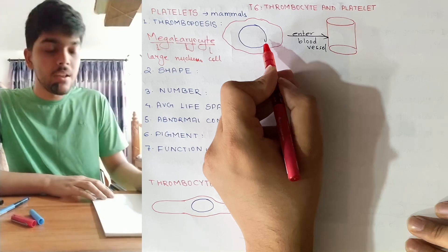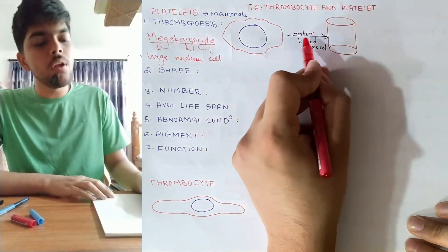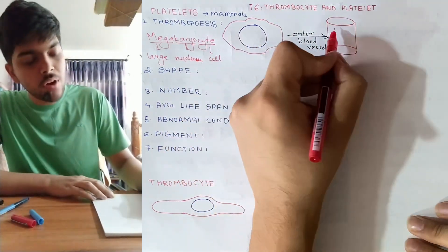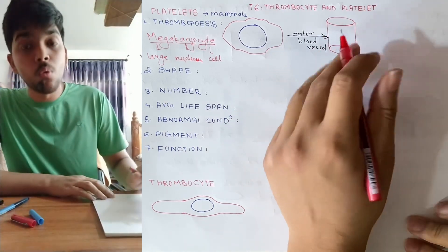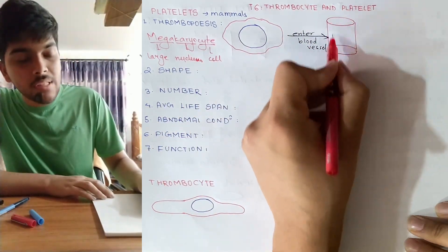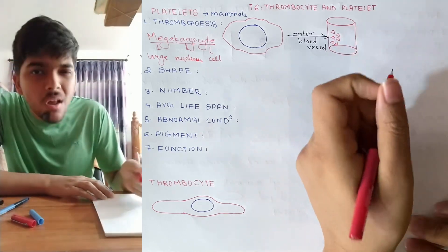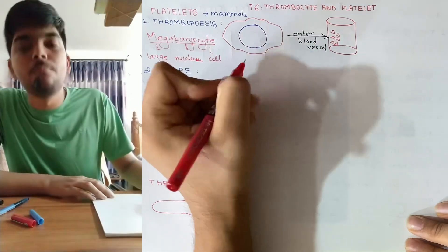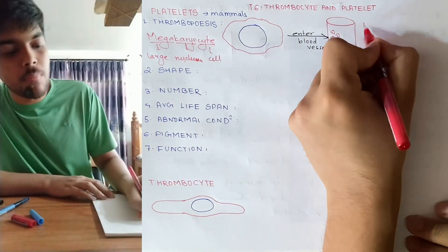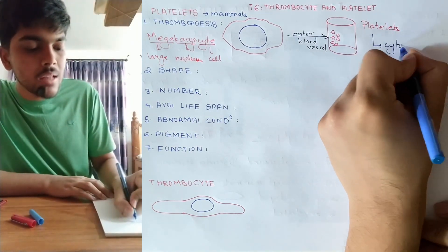This megakaryocyte is formed in the bone marrow. After its formation, it tries to enter the blood vessel and mix with the blood, but the megakaryocyte is too big to penetrate through the wall of the blood vessel. So what happens is that the megakaryocyte breaks down into several smaller pieces — smaller fragments of its cytoplasm.